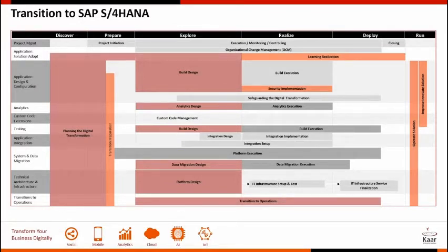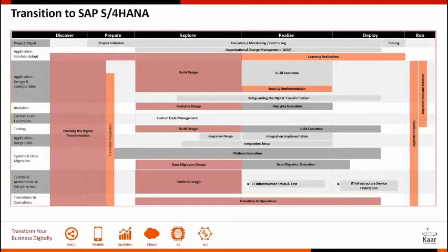The integration work stream includes all activities ensuring the new S/4HANA system is properly integrated to all customer solutions — SAP, non-SAP, cloud solutions, and anything in the landscape that the earlier ECC was connecting to. System and data migration covers planning and setup of all S/4HANA systems as copies of production, because that's where you'll run all your mock conversions, development conversions, and quality conversions, as well as identifying data migration activities.